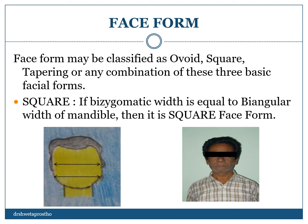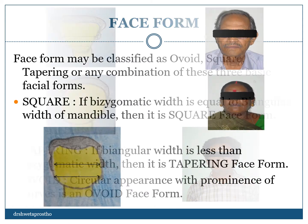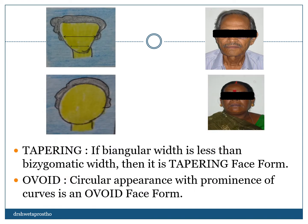Similarly, we analyze for the patient as we see in the second picture. See the first picture — the face form is tapering. In this, the biangular width is less than the bizygomatic width. The male patient shown is having the tapering face form. Below, we have the pictorial image of the ovoid face form. It is circular in appearance with the prominence of curves, as we can also see in the female patient, who is also having the ovoid face form.